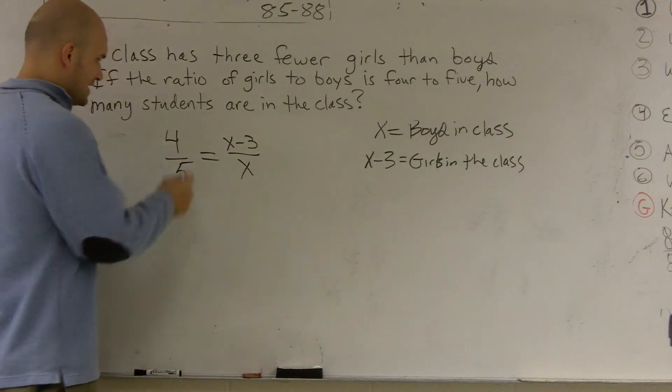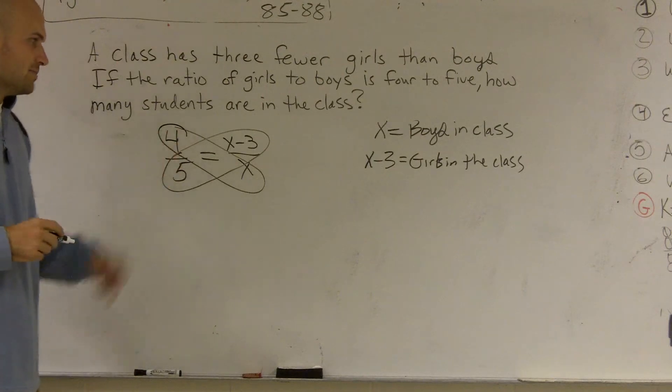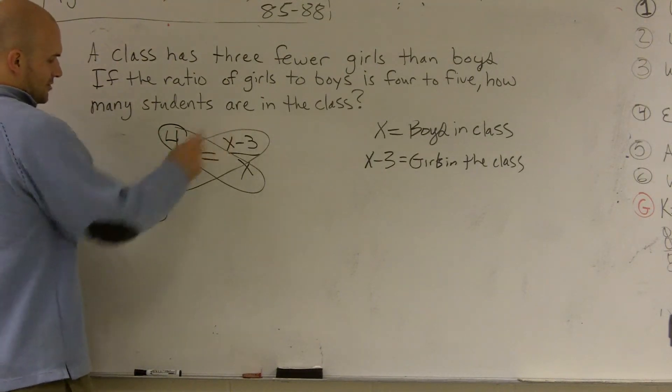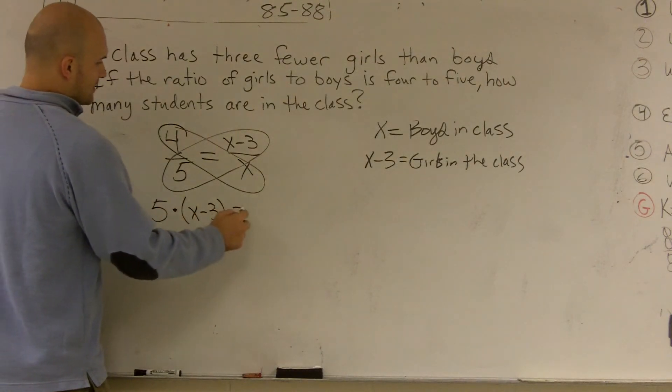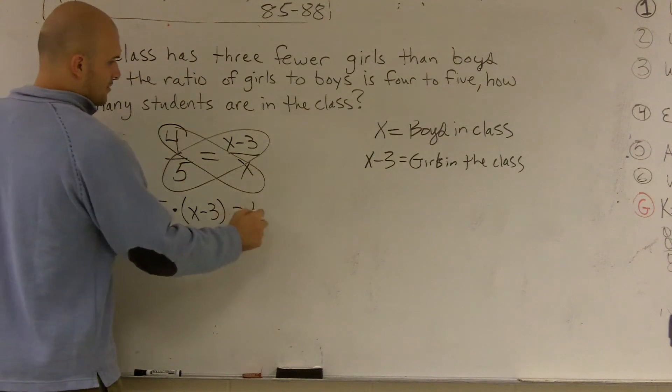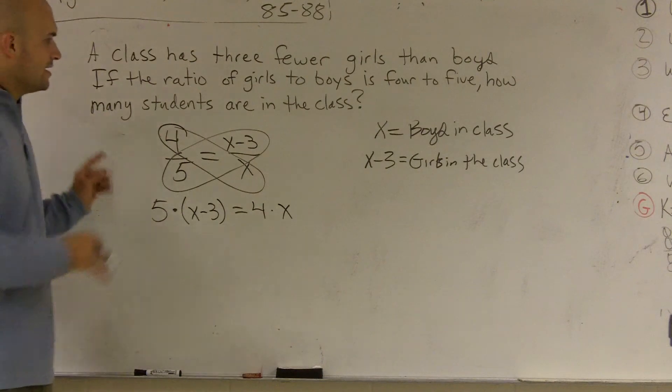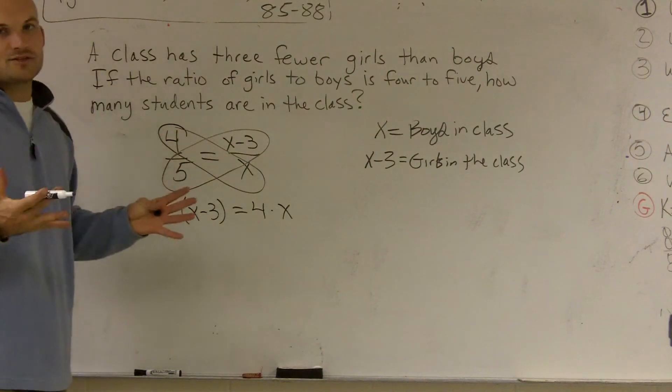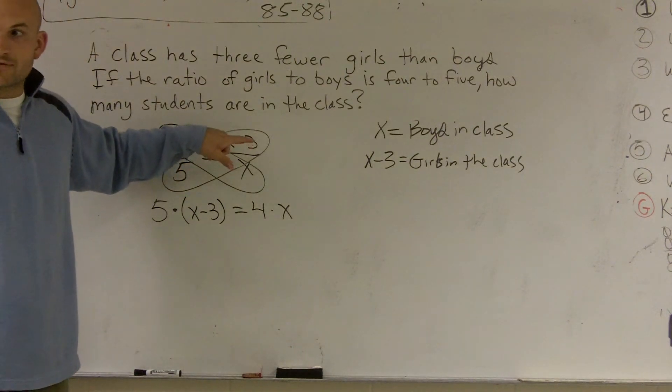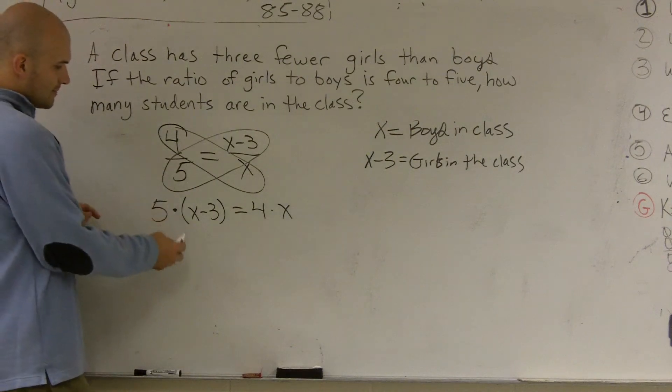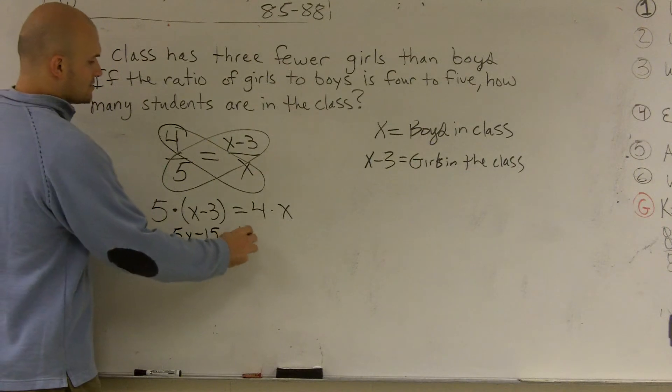Now, here, I can use my cross multiplication technique. All right? I'm going to cross multiply these two quotients here. So I get 5 times x minus 3 equals, the equal sign still stays, 4 times x. Make sure you guys please put x minus 3 in parentheses. If you just want to multiply 5 times x minus 3, so many students make the mistake of multiplying the 5 times the x and forgetting to multiply the 5 times the negative 3. You have to make sure you do that. So then I'm going to get 5x minus 15 equals 4x.